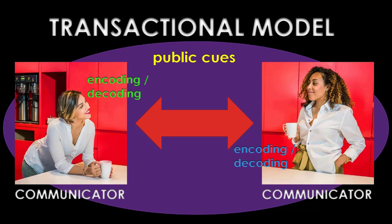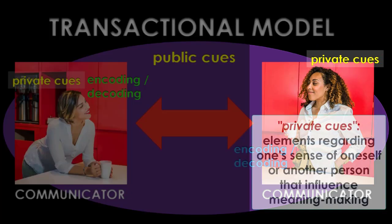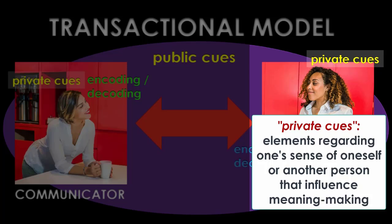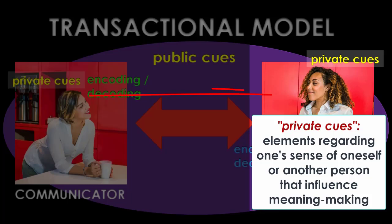All of these things that are part of the public context are going to inform how we encode our messages and how we decode the messages from the person we're having the conversation with. But it's not just the public context that is important. The second set of cues, according to Barnlund, are private cues. These are things that take place in what we referred to as the psychological context. When I'm having a conversation with you, both of us have a sense in our own minds about who we are, what we mean, and what we're trying to communicate.